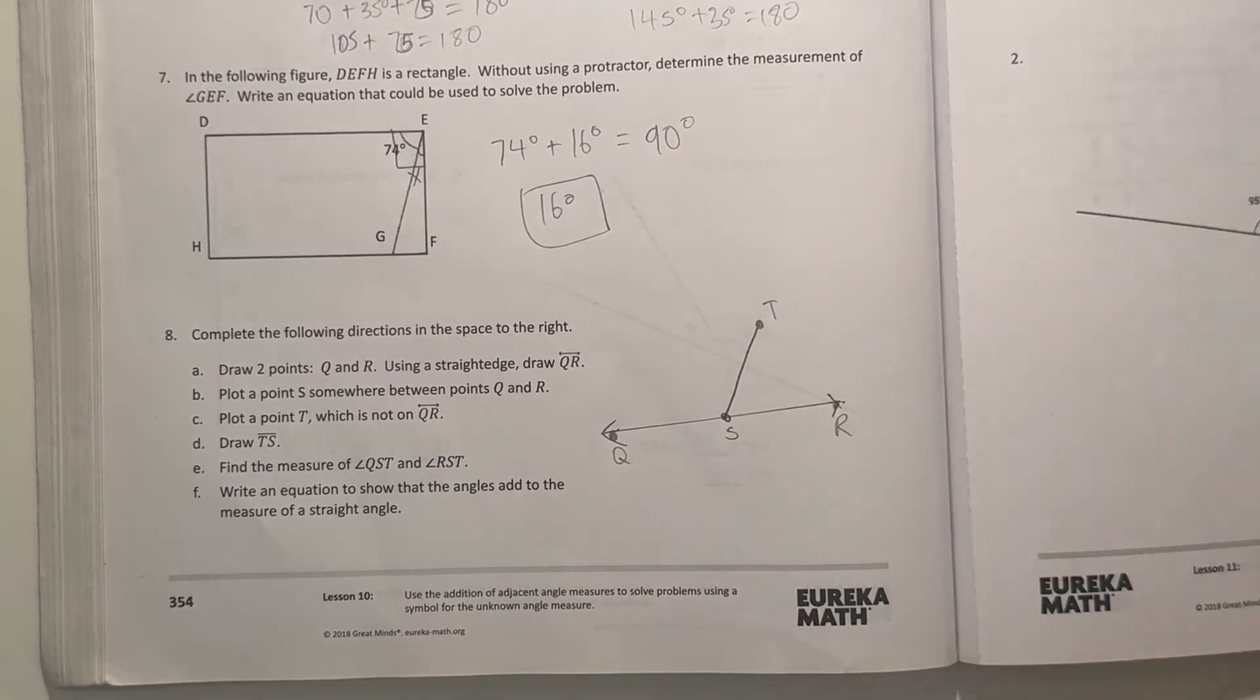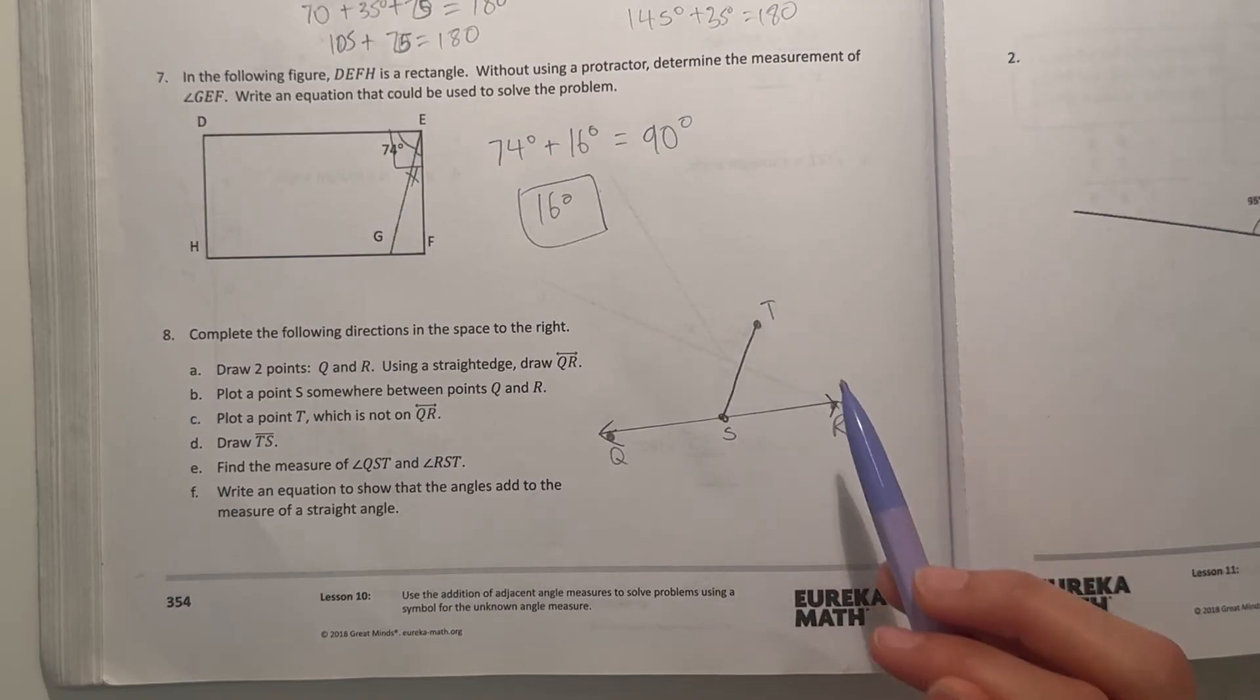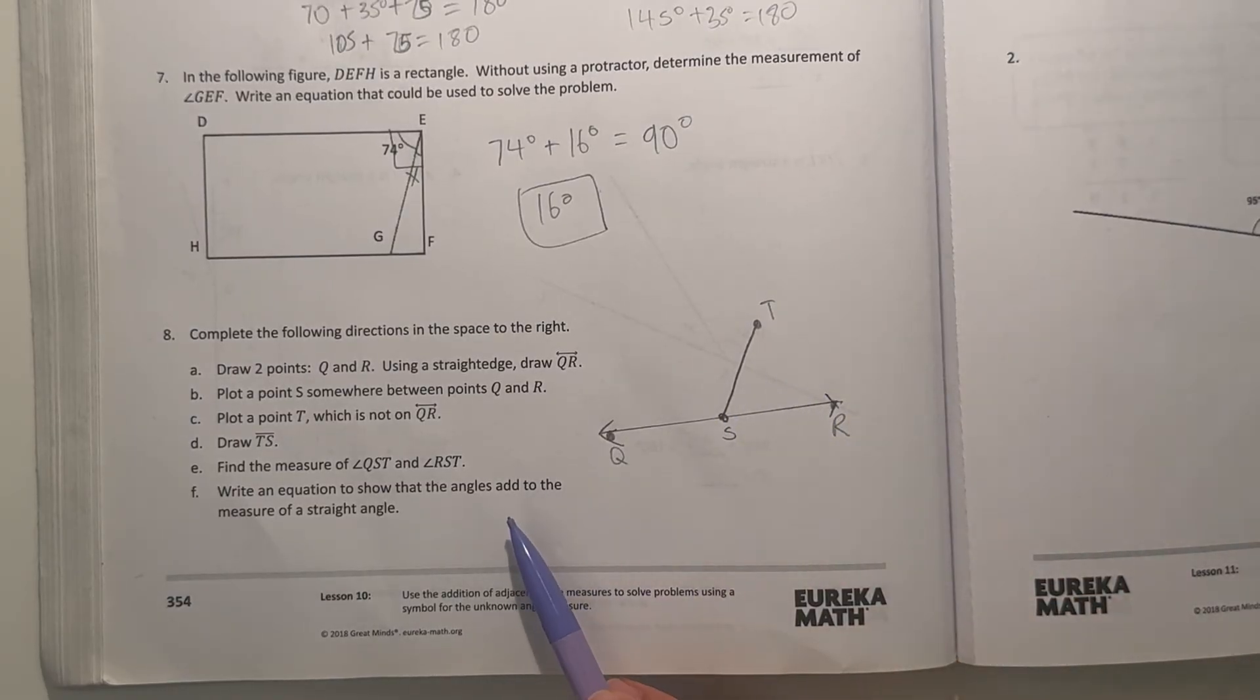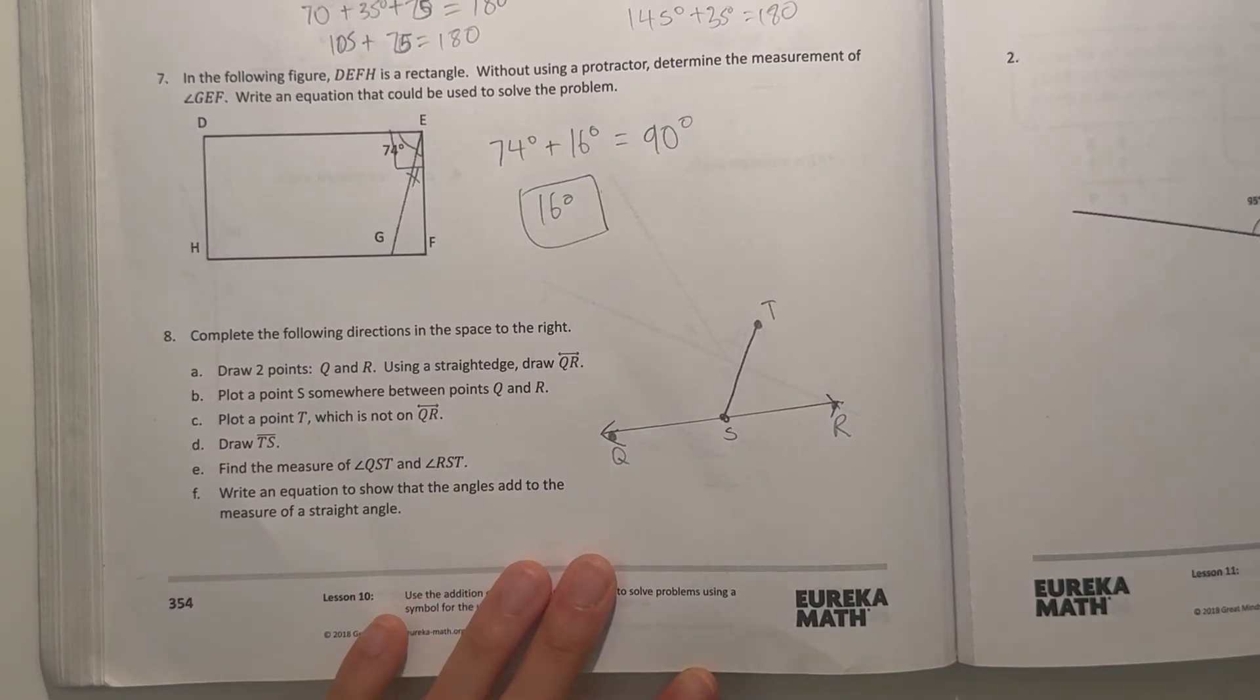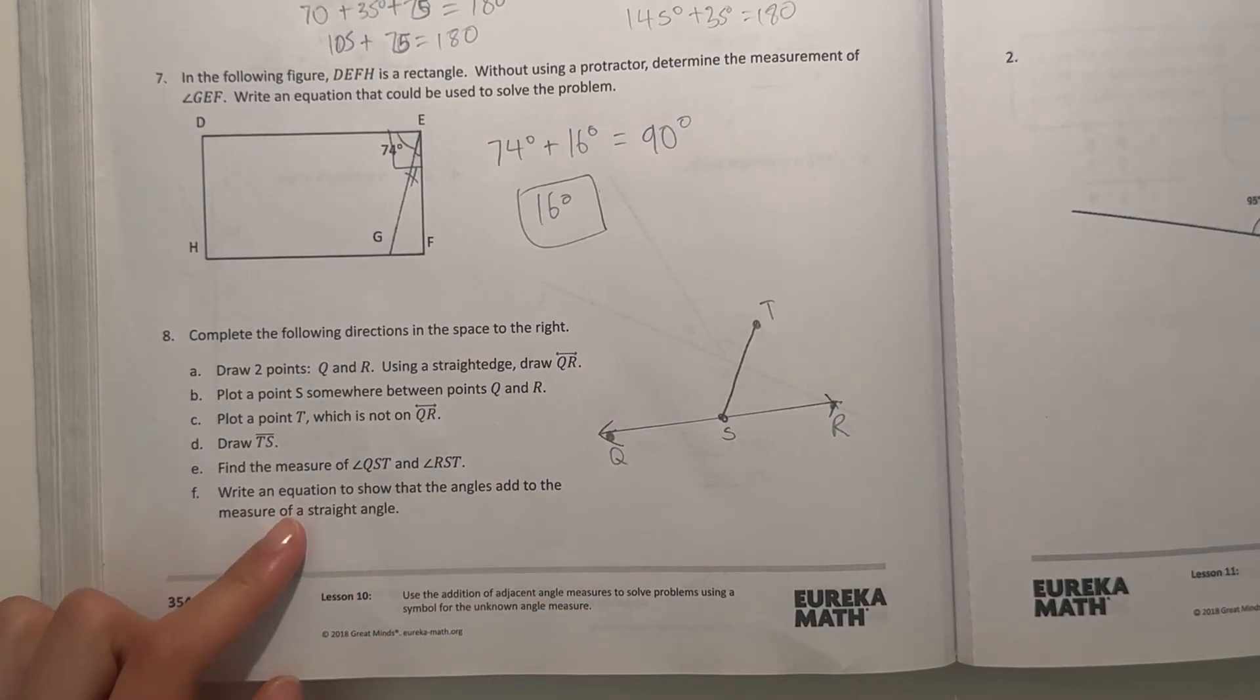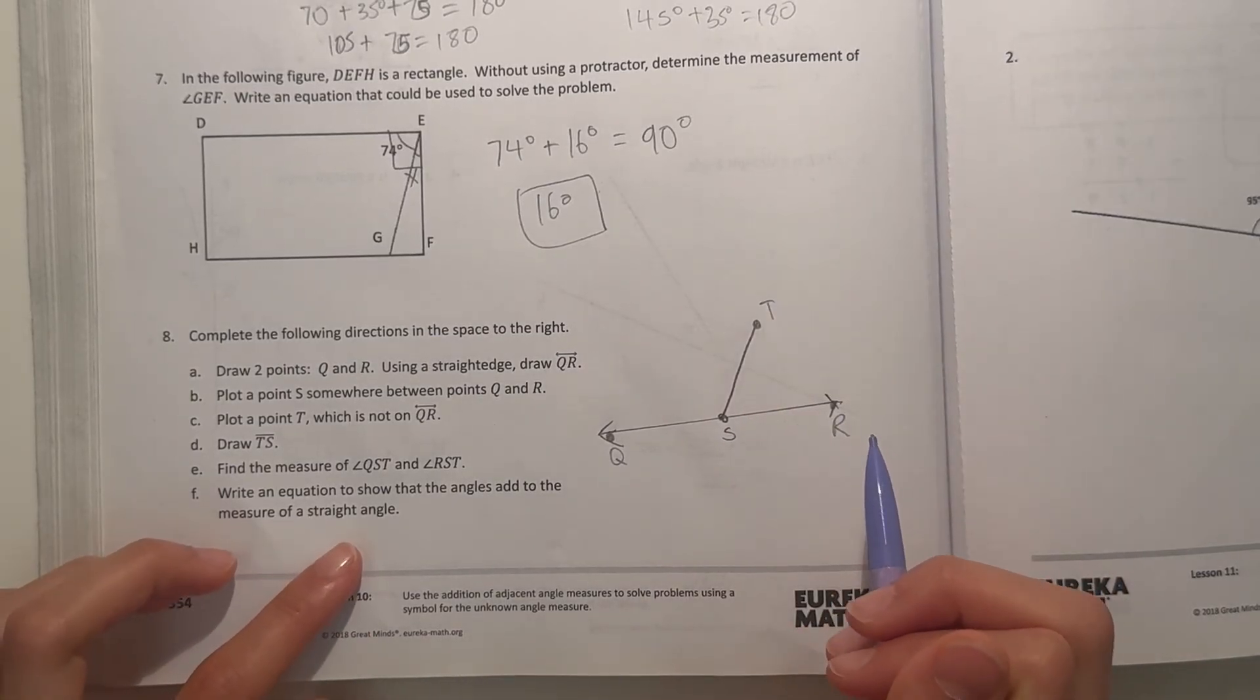Find the measure of QST and RST. Write an equation to show that the angles add to the measure of a straight edge. So we can't find the exact measurement without a protractor because we're not given a measurement yet. But it doesn't ask us to solve it, really. It says write an equation to show that the sum will be 180.